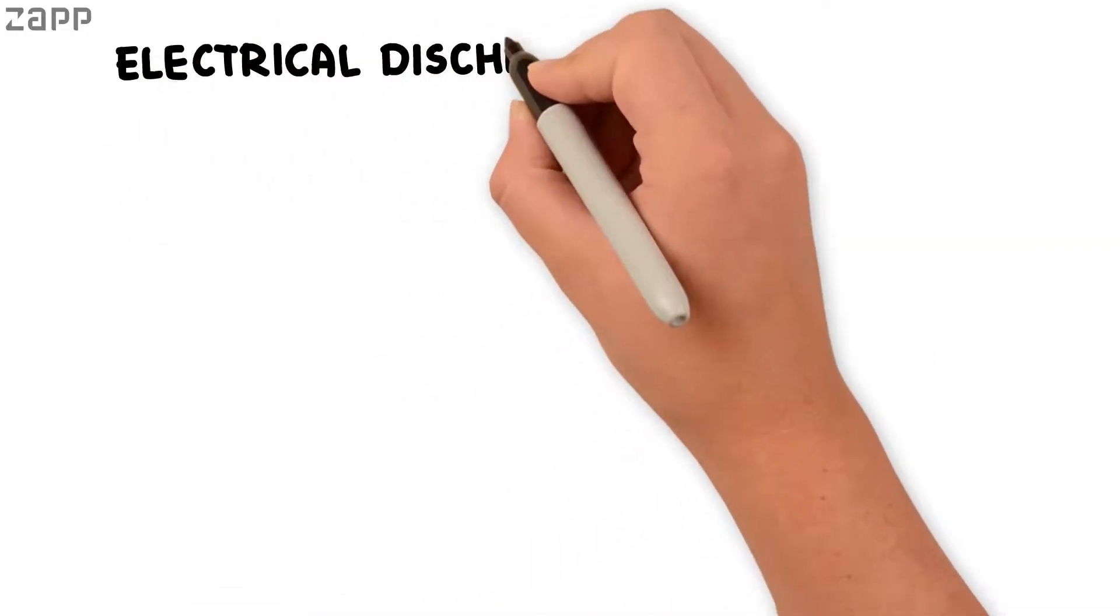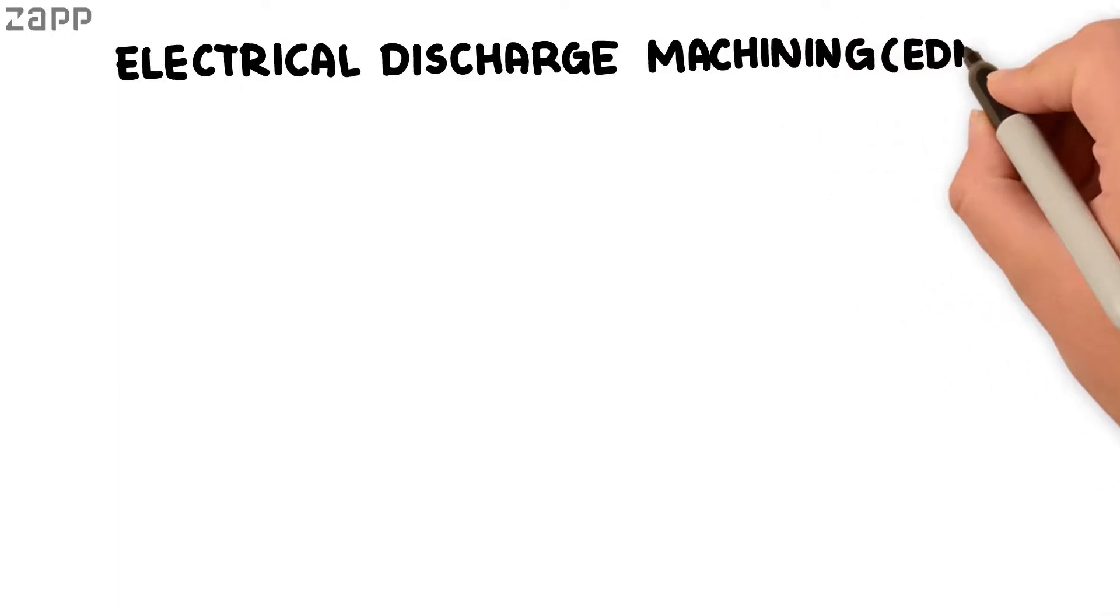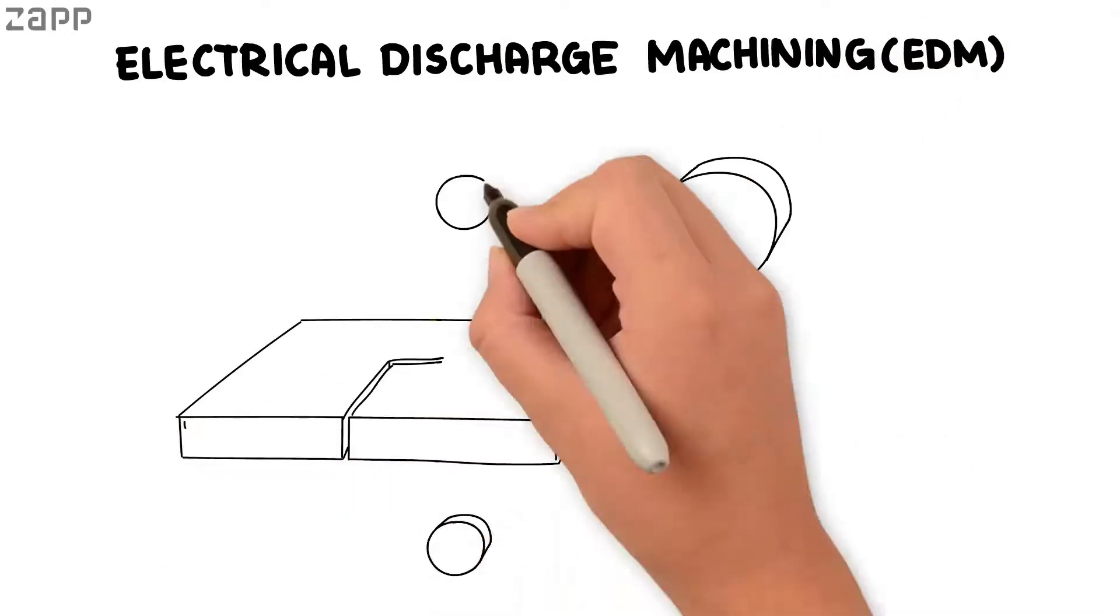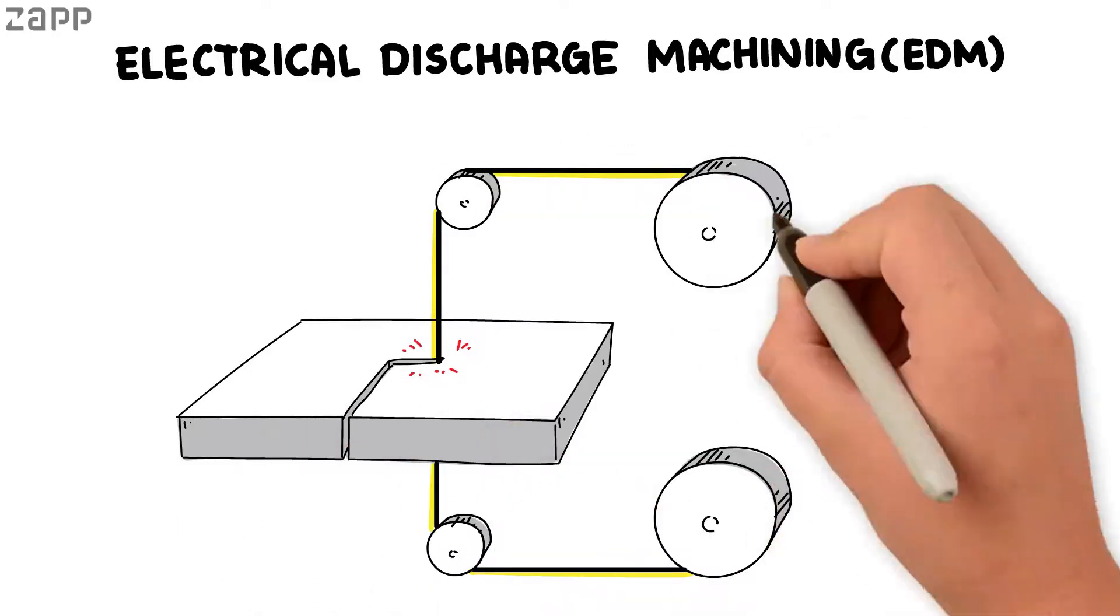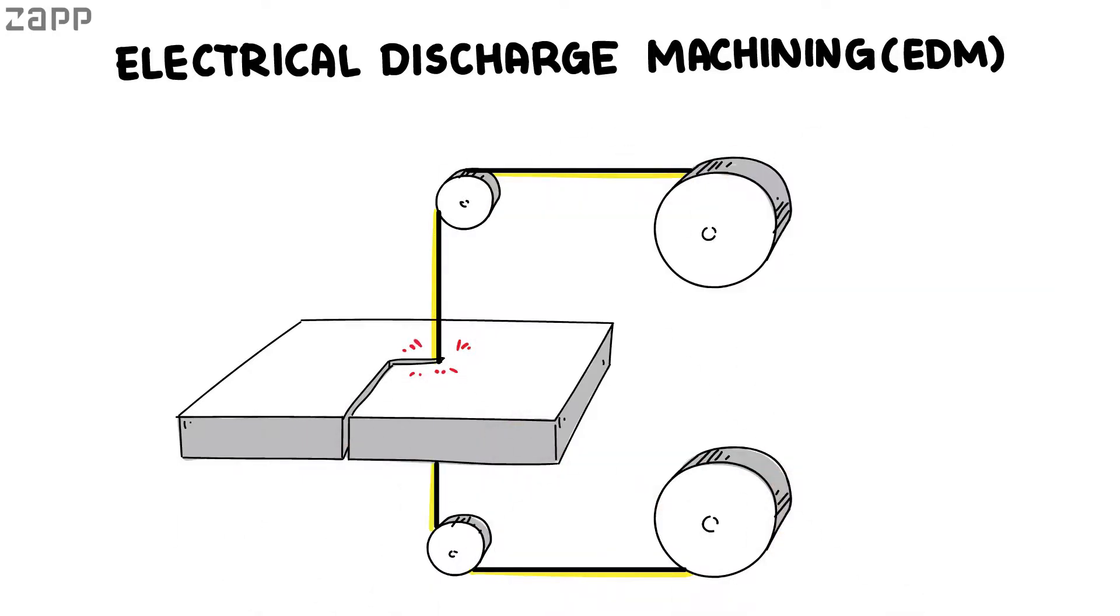Electrical discharge machining, or EDM, is an efficient way to cut hardened steel by using electrodes instead of traditional cutting tools. The electrical discharge causes a fine layer of steel to vaporize. The vaporized steel is then carried away by ionized water.